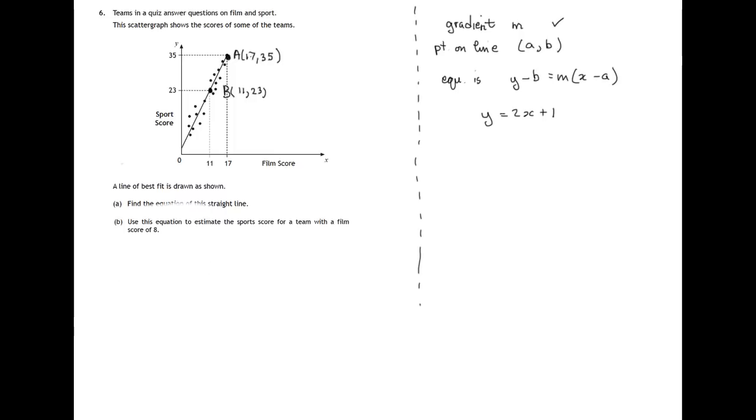So let's now look at the second part of this question. Now that we know y, the sports score, this is the sports score, can be got from the film score, that's the film score, by doubling it and adding 1. Use this equation, which is this one, to estimate the sports score for a team with a film score of 8. So film score 8, x equals 8. And let's try and work out the sports score then, using the equation.